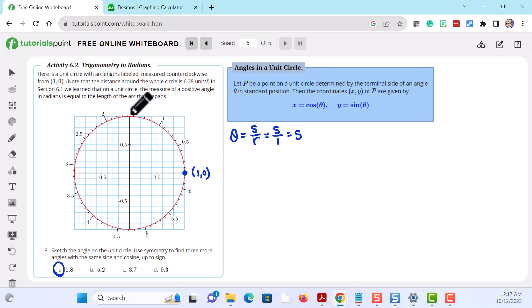So we have 0.5, 1, 1.5, and 1.8 is a little bit before 2.